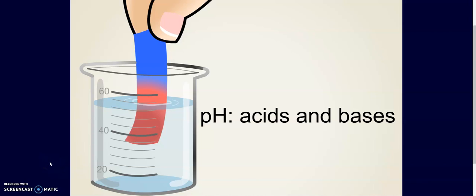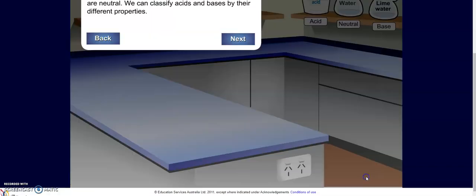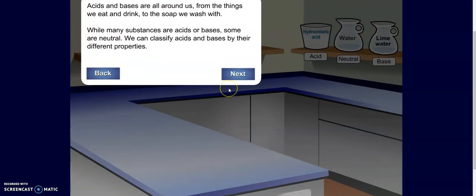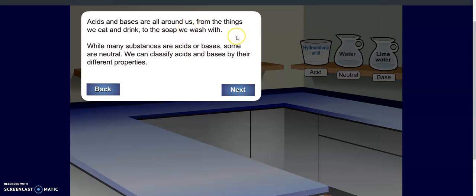Hi science students! Welcome back for another day of digital learning. Today we're going to focus on acids and bases and the properties that they have. Acids and bases are all around us, from the things we eat and drink to the soap we wash with. While many substances are acids or bases, some are neutral, and we can classify acids and bases by their different properties.